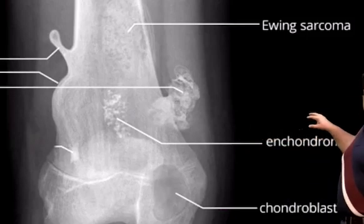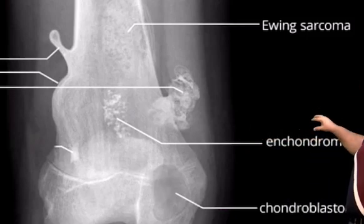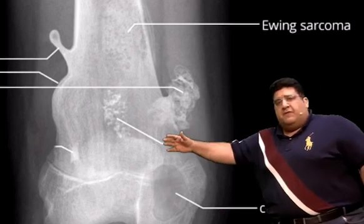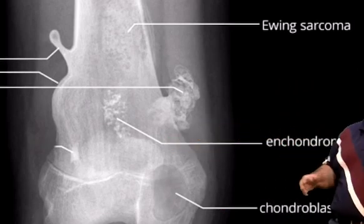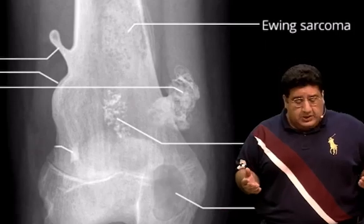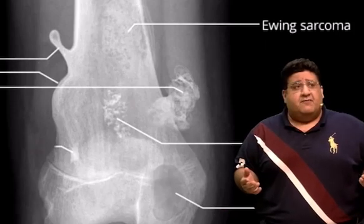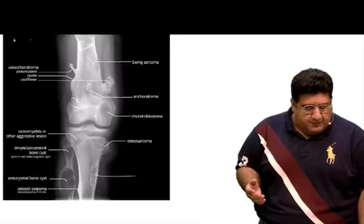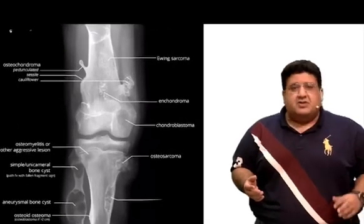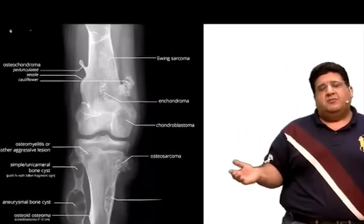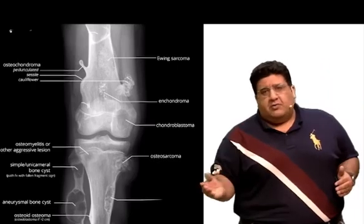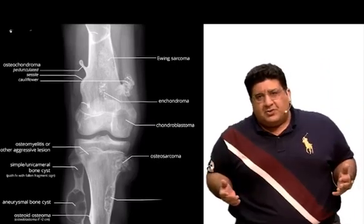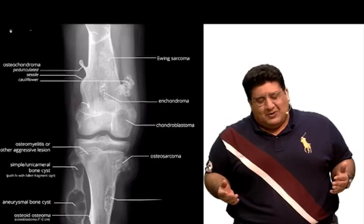The most common benign bone tumor of hand bones is usually seen in short tubular bones of the hand and feet — hand more commonly involved than feet, but can also be seen in long bones like femur. We are talking about enchondroma, usually solitary, rarely multiple. When multiple, they become important MCQs: multiple enchondromatosis is Ollier's disease; Maffucci syndrome is multiple enchondromatosis plus cavernous hemangioma plus phleboliths.